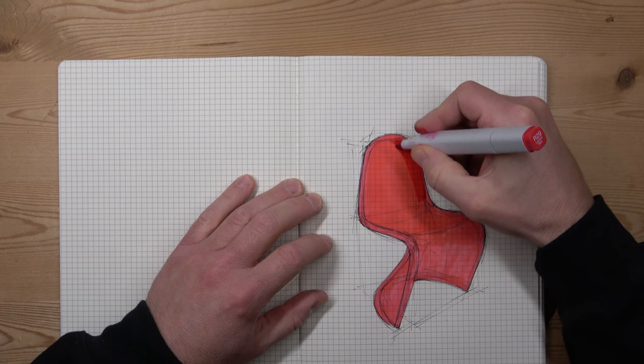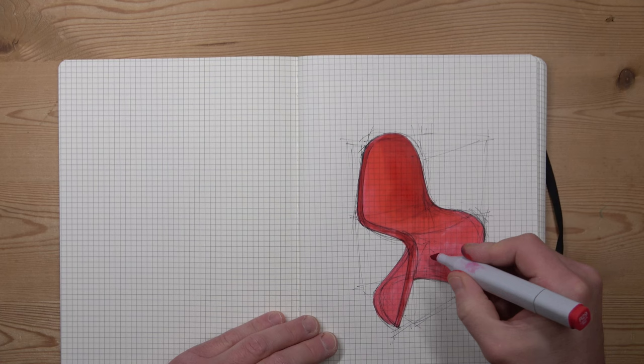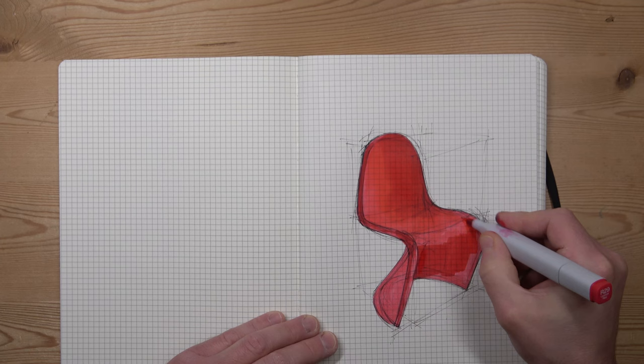I'm going to use light and dark tones to represent shape, and I'm starting with a darker pen to suggest that the surfaces of the chair are curved.